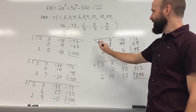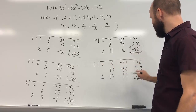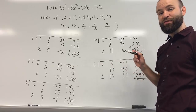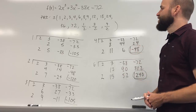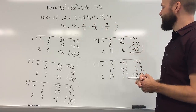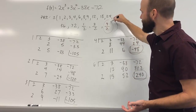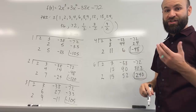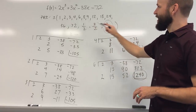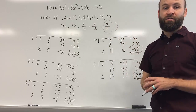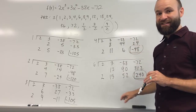Because f of 4 is negative and f of 6 is positive, there must be a zero between 4 and 6. If I look at my list of possible rational zeros, I'm looking for a number between 4 and 6, and the only one I have is positive 9/2, which is 4 and a half. That is between 4 and 6, so instead of continuing to try these in order, I'm going to skip ahead and try 9/2 next.